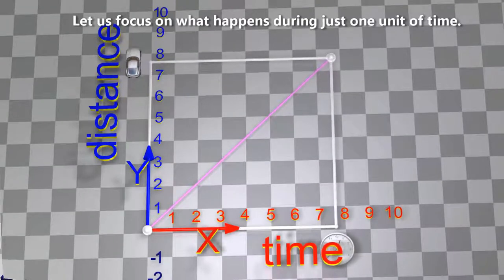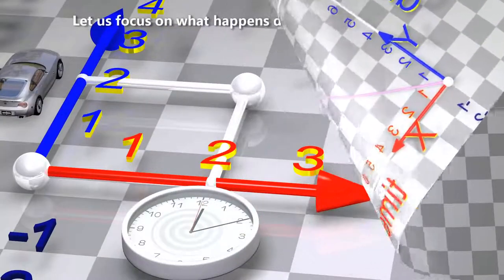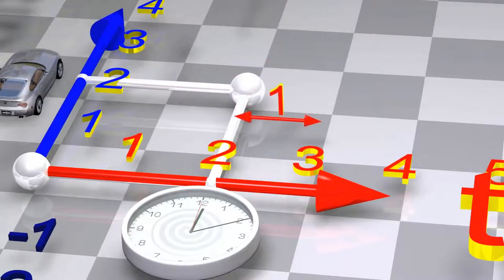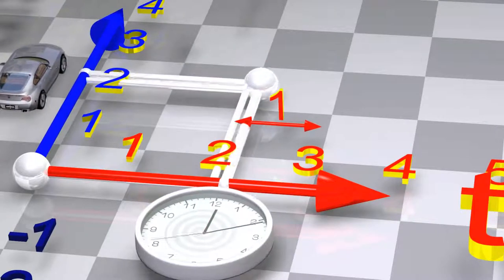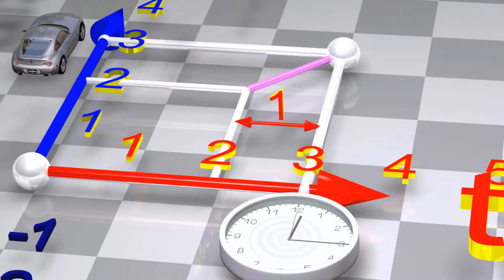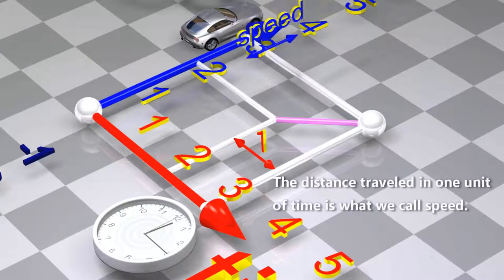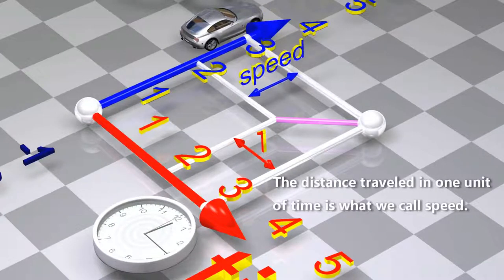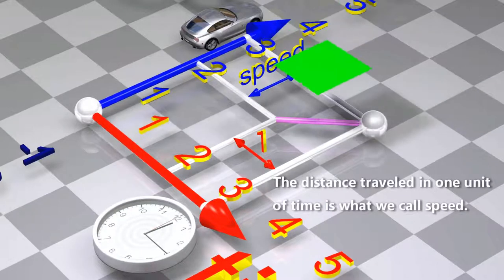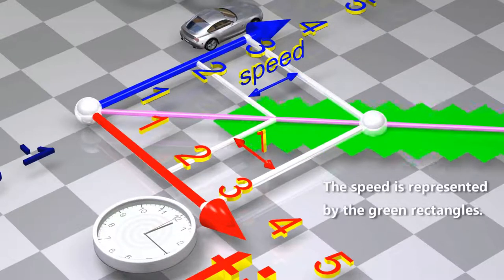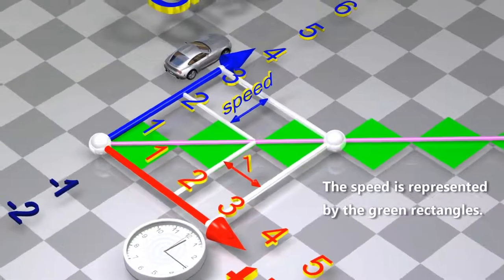Let us focus on what happens during just one unit of time. The distance traveled in one unit of time is what we call speed. The speed is represented by the green rectangles.